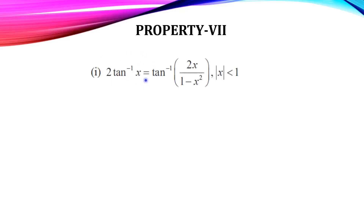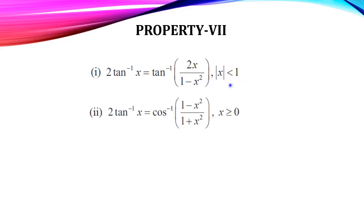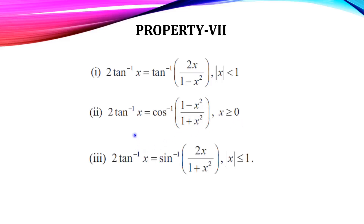Property 7: Double angle formulas. First, 2 tan inverse x = tan inverse(2x/(1−x²)), for |x| < 1. Second, 2 tan inverse x = sin inverse(2x/(1+x²)), for x ≥ 0. Third, 2 tan inverse x = cos inverse((1−x²)/(1+x²)), for |x| ≤ 1.